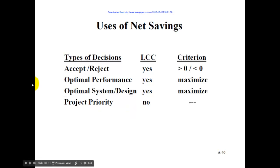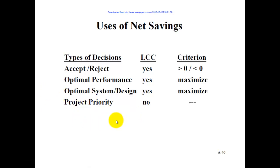However, we can't use net savings for project priority. For example, if we have a solar panel project and a light bulb relamping project, we couldn't prioritize one over the other using net savings.